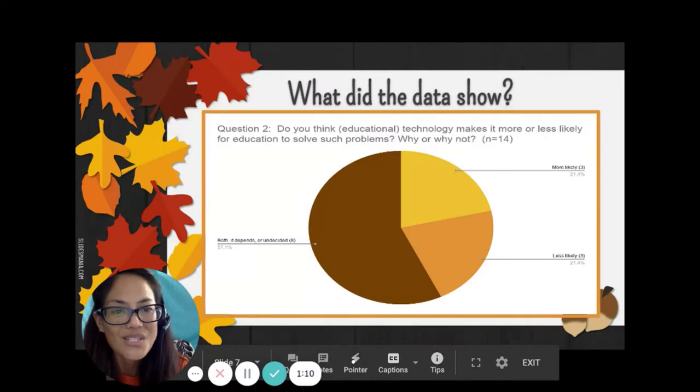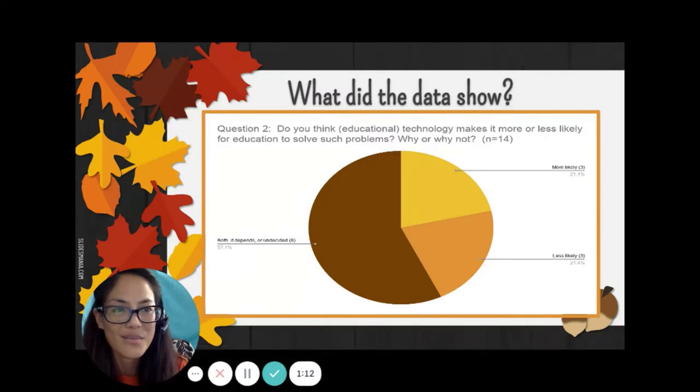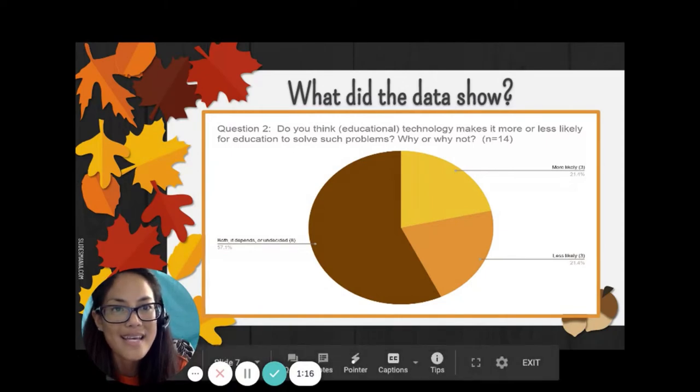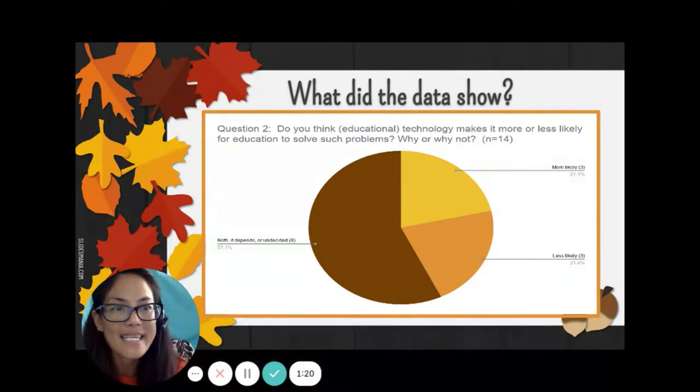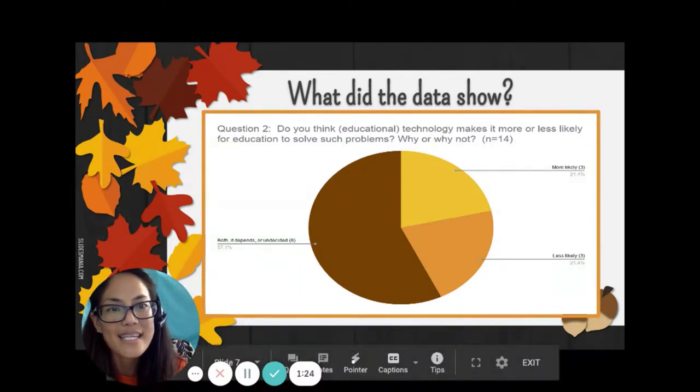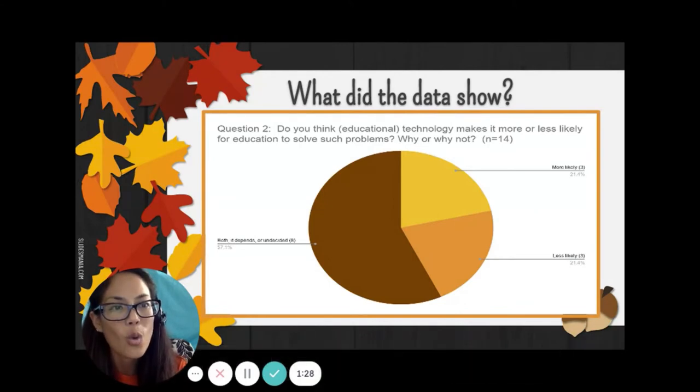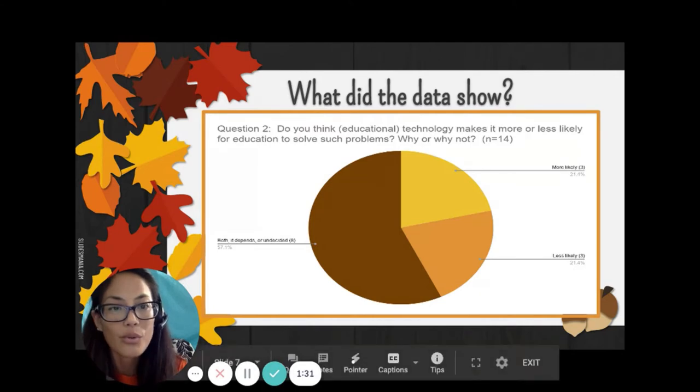On to question two. Do you think educational technology makes it more or less likely for education to solve such problems? Why or why not? Again, I disaggregated more likely and less likely themes from those who chose both, it depends, or who are undecided. The data shows that more likely and less likely had three people each, whereas both, it depends, or undecided had eight people.